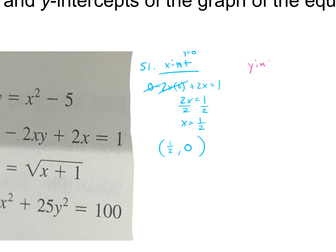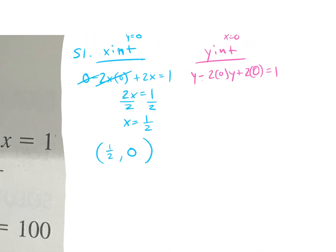To find the y-intercept, plug in 0 for x: (y minus 2 times 0)(y plus 2 times 0) equals 1. Multiplying by 0 gives 0, so it goes away, leaving y equals 1. The y-intercept is (0, 1).